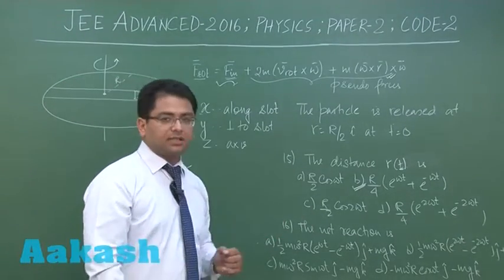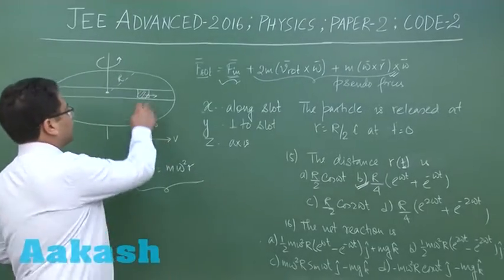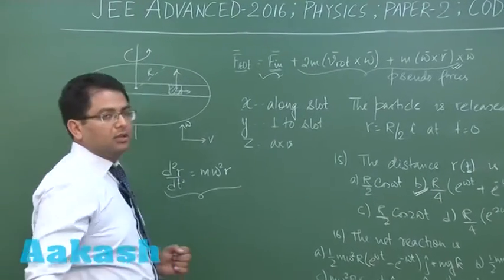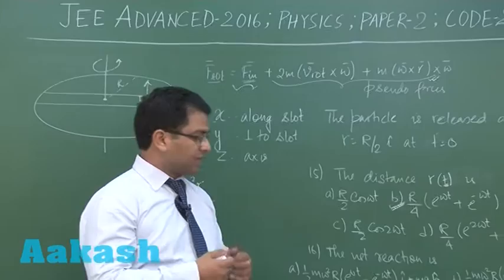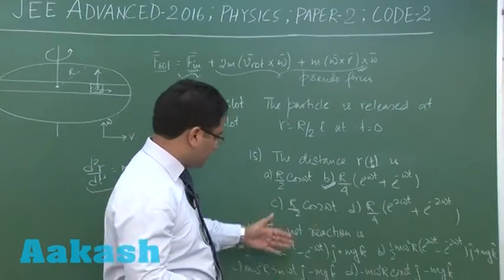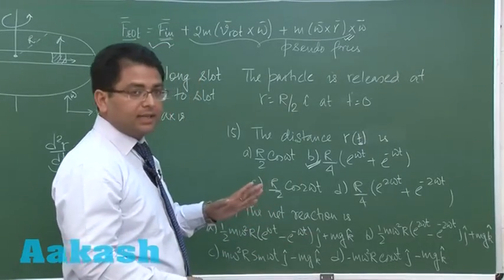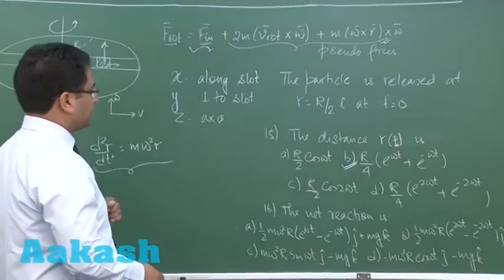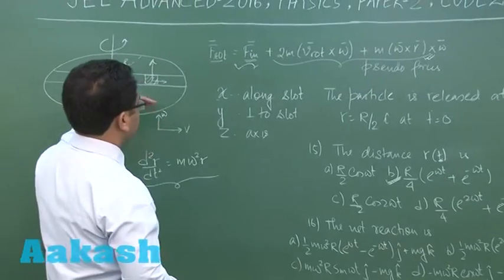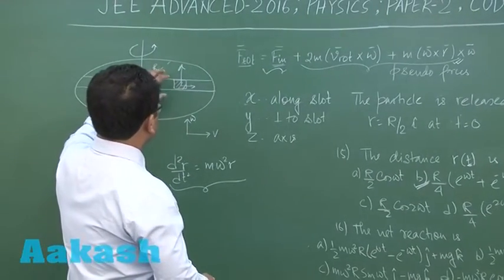Now the net reaction, one reaction is of course to balance the mg. mg into 2 is of course, and c and d are already eliminated. The next that I was discussing was the reaction when you have, you know, to balance or to offset the force that comes in this direction.